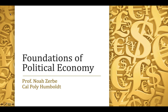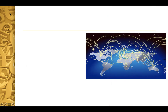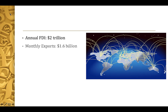The best place to begin is understanding what exactly constitutes global political economy — what we will be studying this semester. The scale of the global economy is almost unbelievable. Each year multinational corporations invest around two trillion dollars in foreign countries — we usually call this foreign direct investment or FDI. Every month countries export about 1.6 billion dollars worth of goods, and every single day more than five trillion dollars turns over in foreign exchange markets.